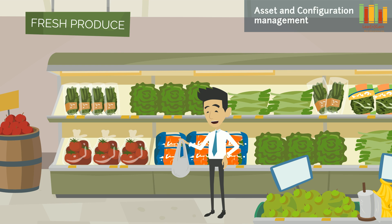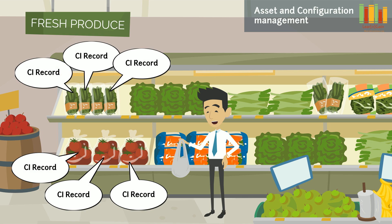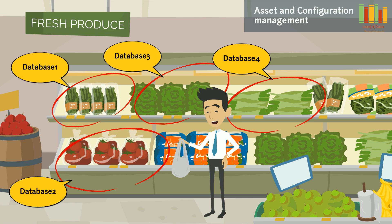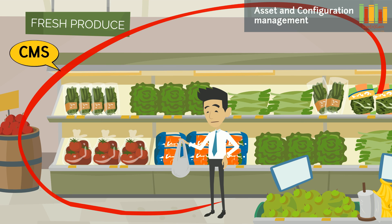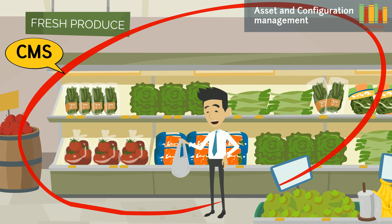Let us try to relate the items in a supermarket. Each veggie within a group is related to a configuration item record. Each veggie group can be related to a Configuration Management Database. There will be multiple databases, one for each type of veggie. The entire veggie section can be related to CMS — the Configuration Management System.